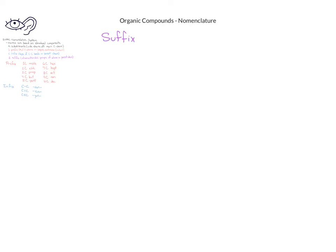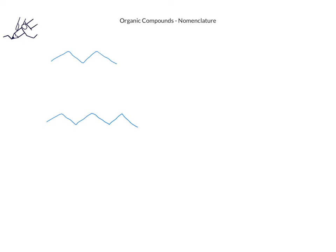The final part of the name is the suffix. This indicates the characteristic groups of atoms that are present. If only carbons and hydrogens are present, or if the main carbon chain is only carbons and hydrogens, that's a type of compound we call a hydrocarbon, and we use the suffix -e.